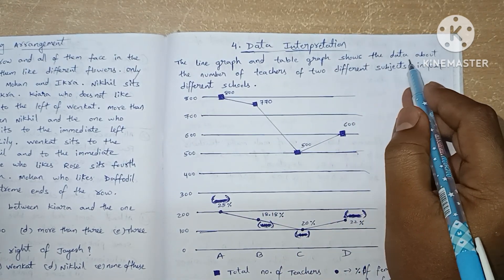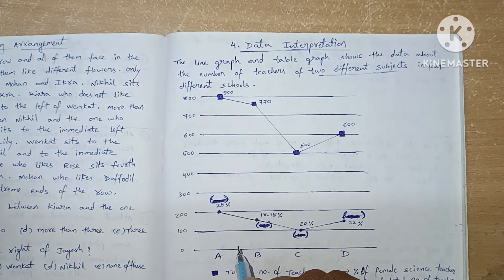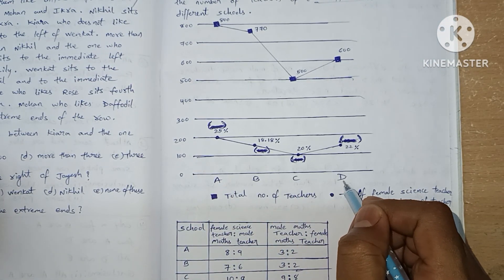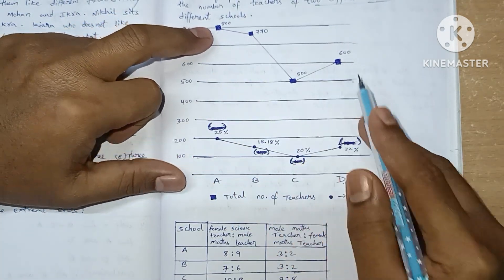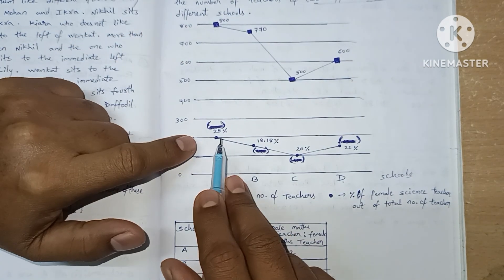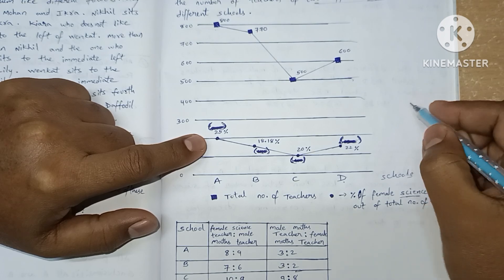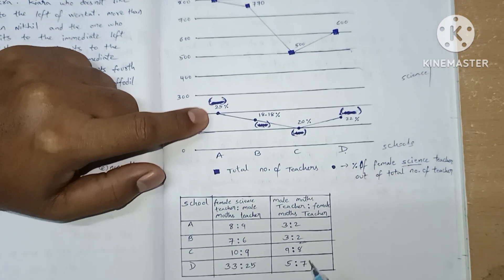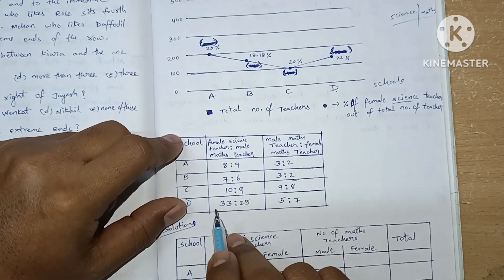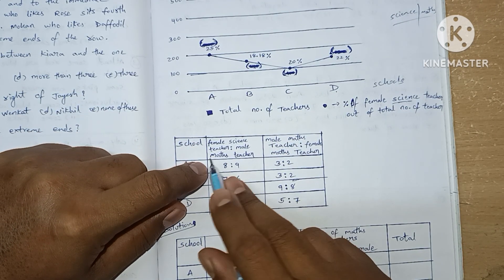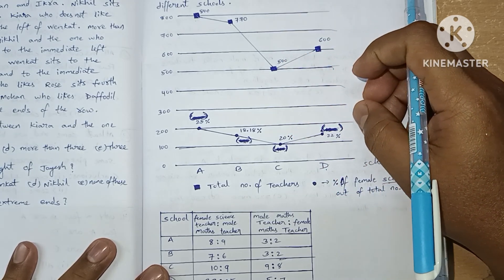The line graph and the table graph show data about the number of teachers of two different subjects — science and maths — in four different schools: A, B, C, and D. The square boxes show the total number of teachers, and the line shows the percentage of female science teachers. The table shows the ratios of different types of teachers. Using this table and the line graph, we need to make a complete summary table.